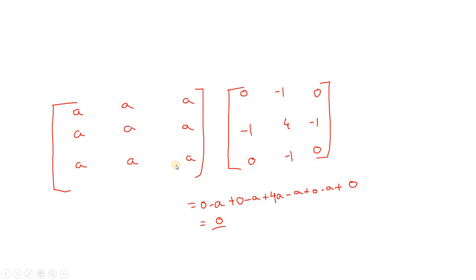This particular kernel, as discussed in my previous video with mathematical intuition, is the popular Laplacian filter used for edge detection — that is, a high pass filter derived using double differentiation in discrete mathematics. Now we convolve this kernel with our image: a×0=0, a×(−1)=−a, a×0=0, a×(−1)=−a, a×4=4a, a×(−1)=−a, a×0=0, a×(−1)=−a, a×0=0.